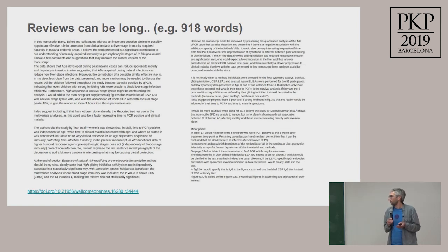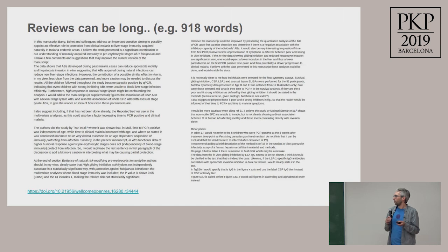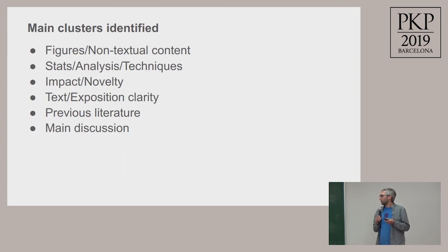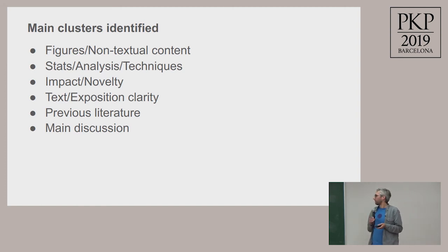PeerTags was a project recently done by Alessio. Some peer reviews might be quite long, and if you publish manuscripts with the reviews, the question is: can we find some structure in those reviews, hopefully automatically? Alessio looked at some clustering of the text. We split it into sentences, and these are the six categories he found: figures, stats, impact, text, literature, and main discussion.